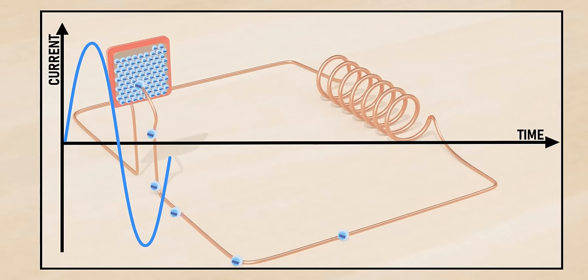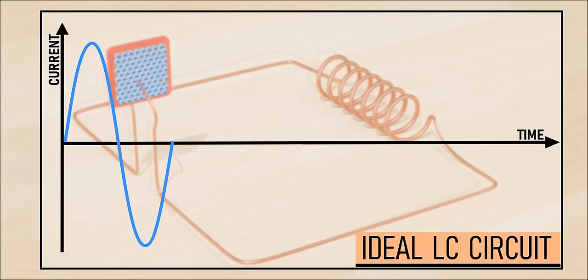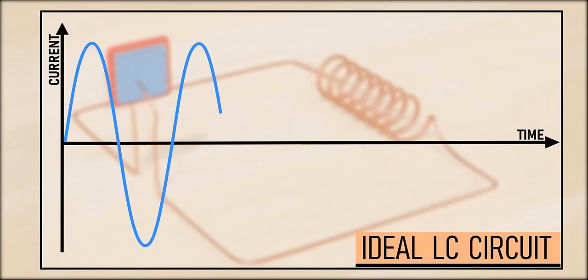Hence, in an ideal circuit, this back-and-forth flow of current would continue to charge and discharge the capacitor and form endless oscillations of energy.